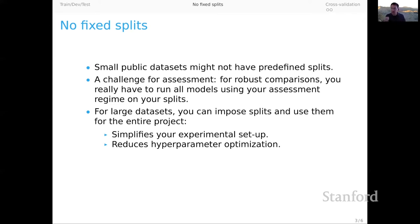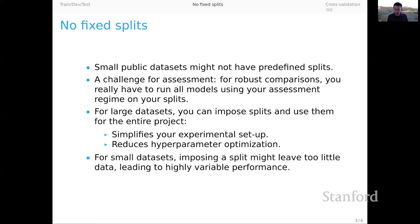It does presuppose that you have a pretty large data set because, as I said before, you have to give up a whole bunch of examples to dev and test, but it will simplify other aspects of your project if it's feasible. For small data sets, though, imposing a split might leave too little data leading to highly variable performance. And in that context, if that's the kind of behavior that you observe, you might want to move into the mode of cross-validation.